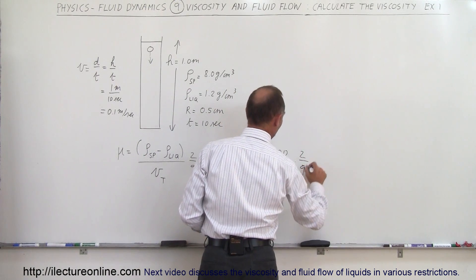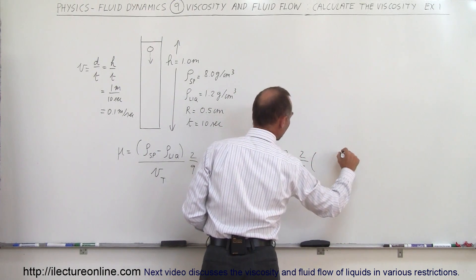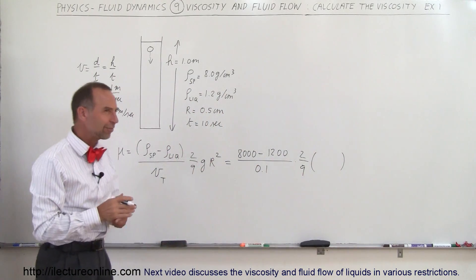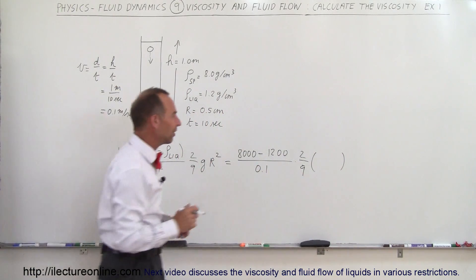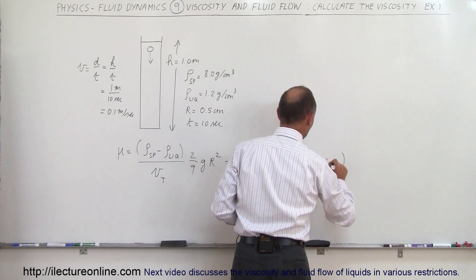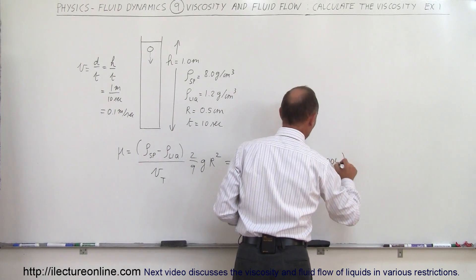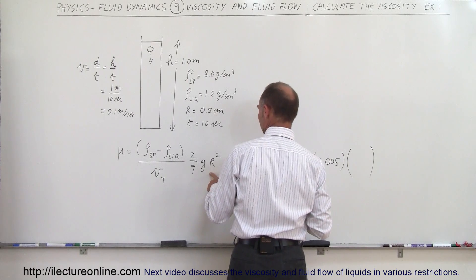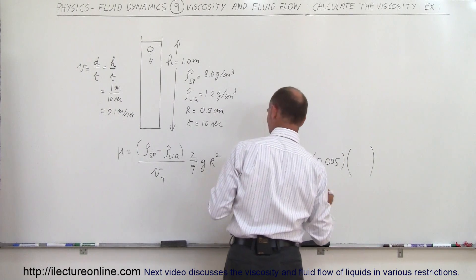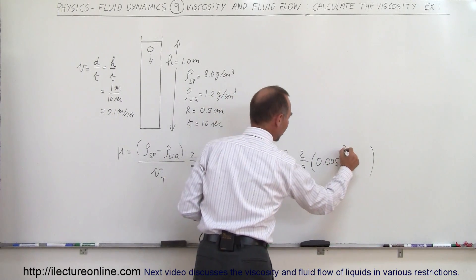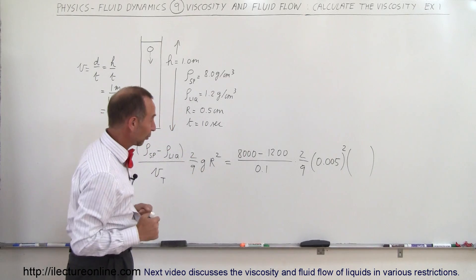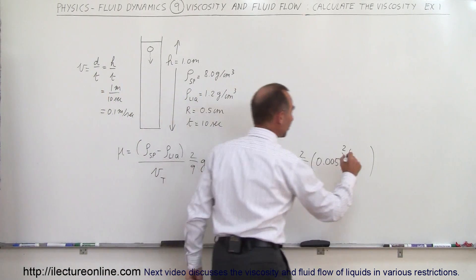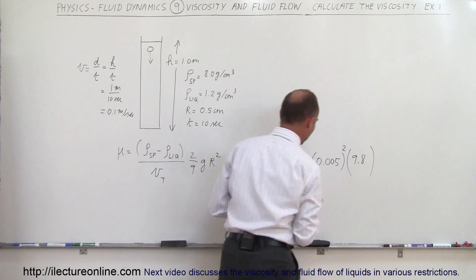Times 2/9 — the radius, now we have to convert to meters: 0.5 centimeters is 0.005 meters. Then we have the radius squared, and we multiply by 9.8 for the acceleration due to gravity.